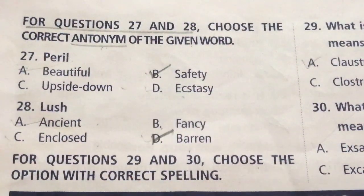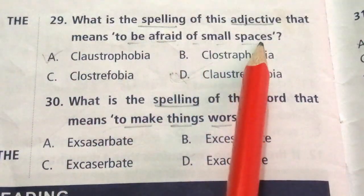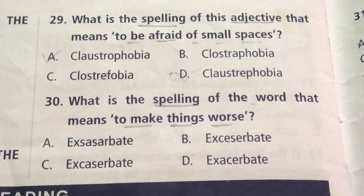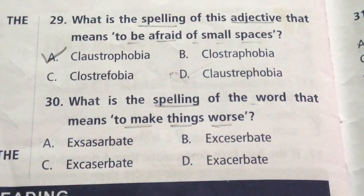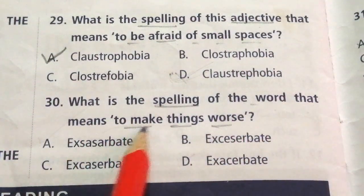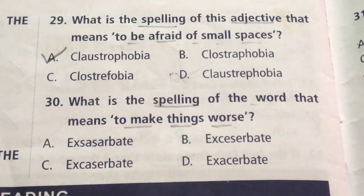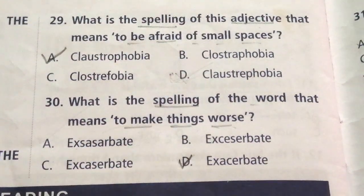For questions 29 and 30, choose the option with correct spelling. Question 29: What is the spelling of this adjective that means to be afraid of small spaces? Read the given options carefully. The answer is A: Claustrophobia. Question 30: What is the spelling of the word that means to make things worse? Read the options carefully. The answer is D: Exacerbate.